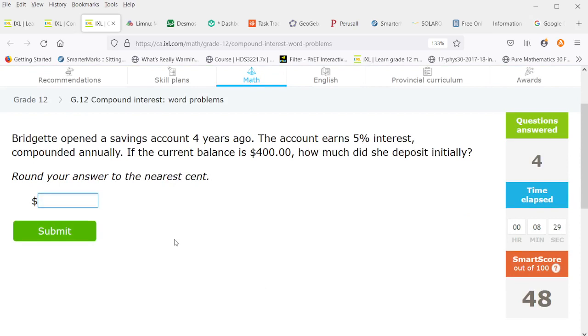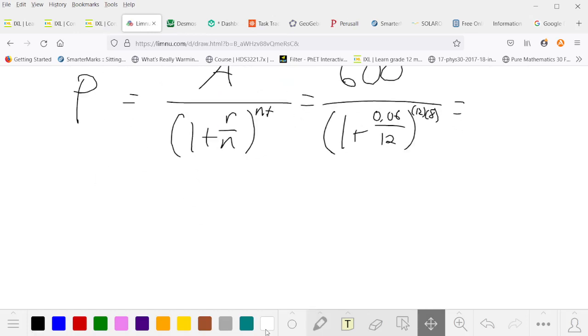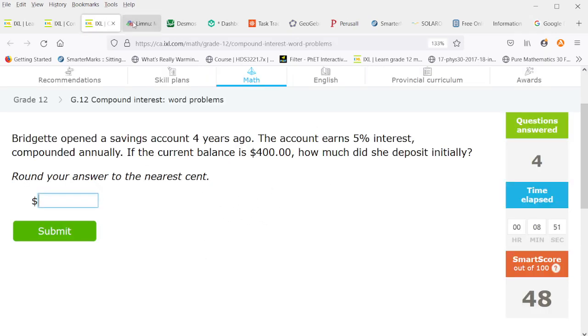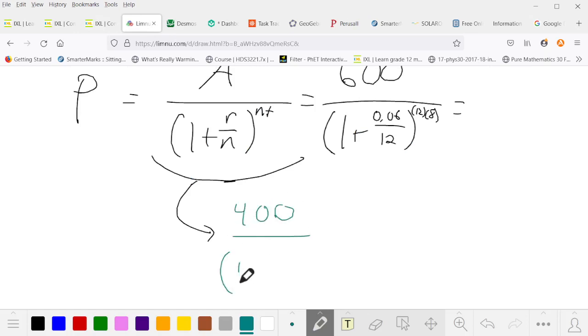Bridget opened a savings account four years ago. The account earns 5% interest compounded annually. And the current balance is 400. So here's the advantage. In this case, we can go straight to this version of the formula. So in this case, the amount she has is 400. And that's 5% compounded annually. And it's been 4 years. So 4 times 1 is 4. So this is $329.08.